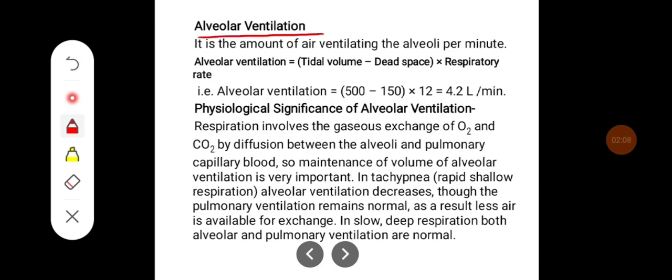Alveolar ventilation is the amount of air ventilating the alveoli per minute. Alveolar ventilation can be given as tidal volume minus dead space, multiplied by respiratory rate. That is: (500 minus 150) multiplied by 12, where 500 is tidal volume and 150 is dead space, giving 4.2 liters per minute — the normal alveolar ventilation.